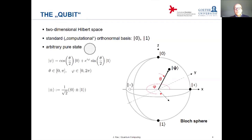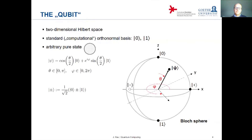These two states feature often in quantum computation and we'll encounter them a lot. You can easily verify that the |+⟩ and |−⟩ states are orthogonal to each other, so they constitute a basis — an alternative, rotated basis in two-dimensional Hilbert space. Graphically on the Bloch sphere, they are also on opposite sides: they are antipodal states.